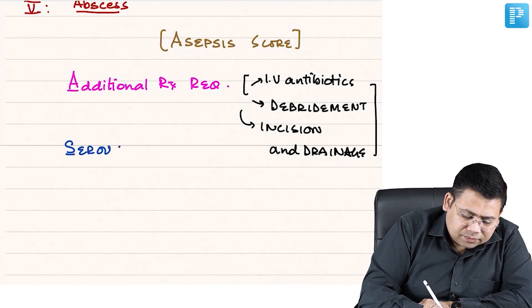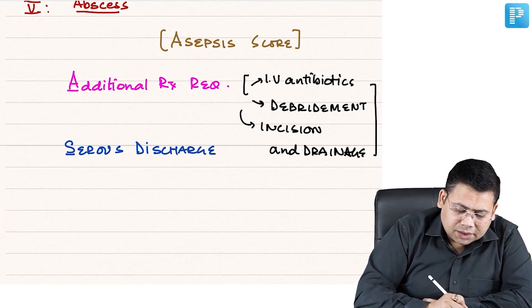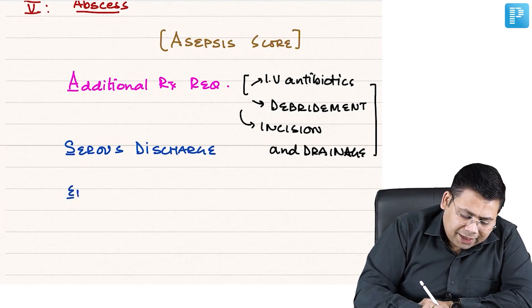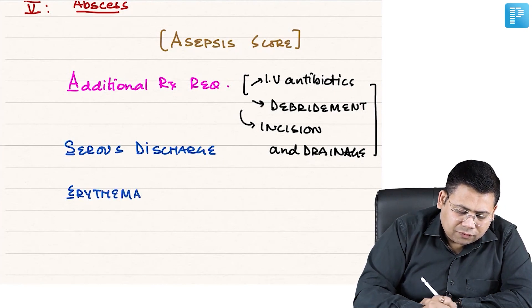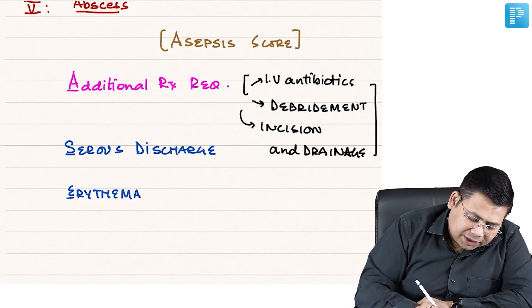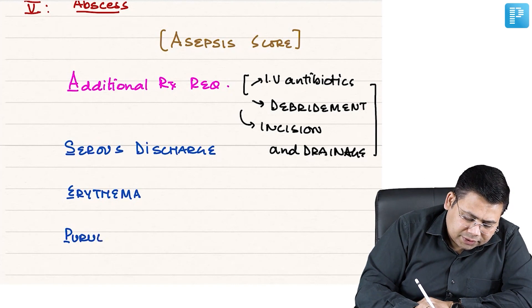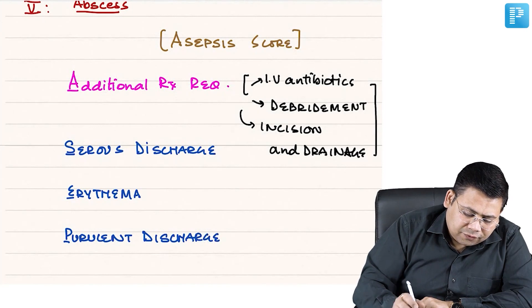Serious discharge. E stands for erythema around the wound. P stands for purulent discharge.